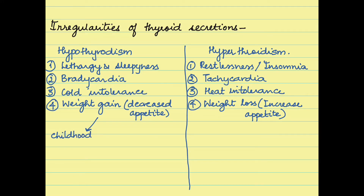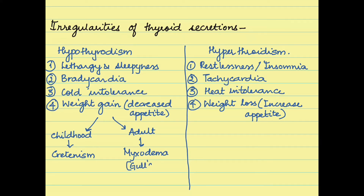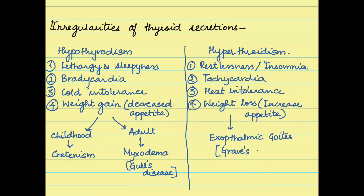If there is a decrease in thyroxine levels during adulthood, it results in a condition called myxedema or Gull's disease. Hyperthyroidism is associated with a disorder called Graves' disease or exophthalmic goiter. Now let us see these in detail, starting with cretinism.